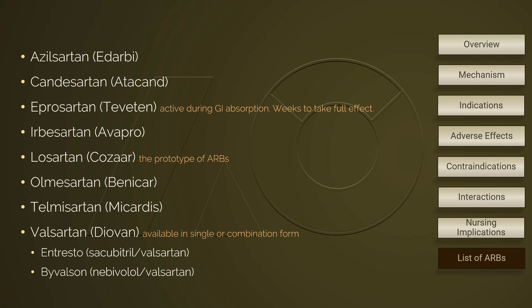All ARBs are dosed once per day, except for valsartan, which may be used twice a day. Candesartan becomes active during the process of GI absorption, and its full antihypertensive effect takes up to 2 weeks. Losartan needs to be metabolized to its effective form, and losartan is the prototype of ARBs. Valsartan is available as a single substance or in combination with other substances.